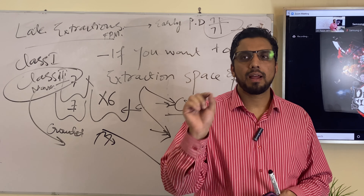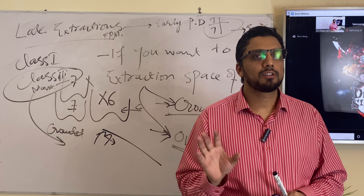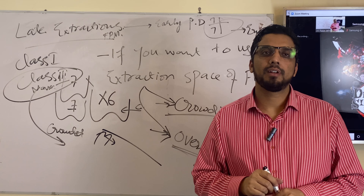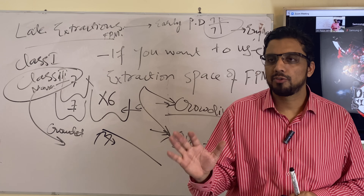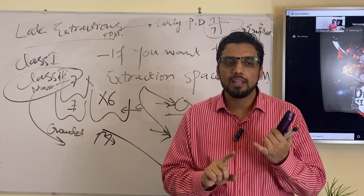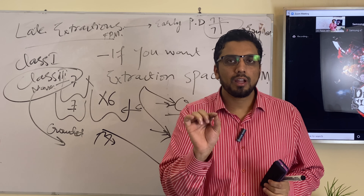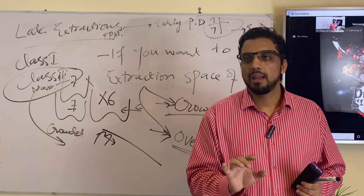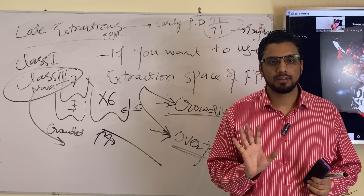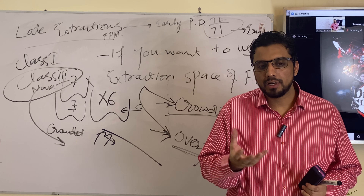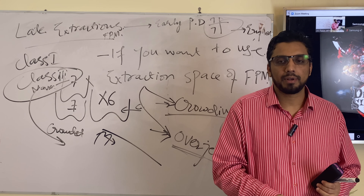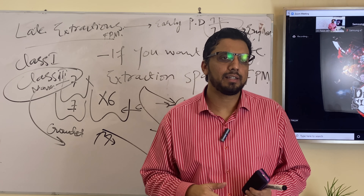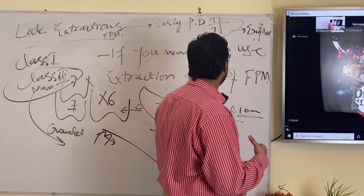To manage supra-eruption of the opposing tooth, you can use a removable appliance, fixed appliance by bonding, or a functional appliance. The key word is supervision — supervising the opposing tooth for supra-eruption. If supra-eruption has just started, manage it by one way or another; you can even extract the opposing tooth so that adjacent teeth erupt into that space.